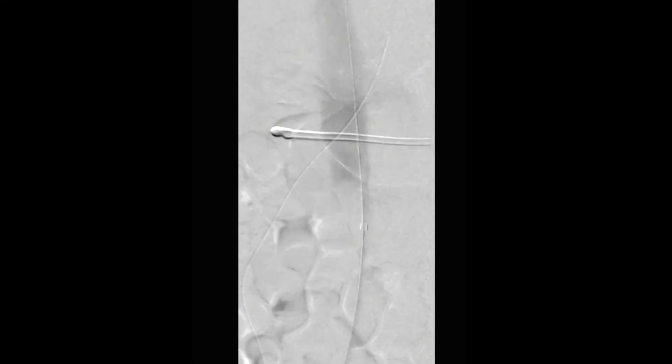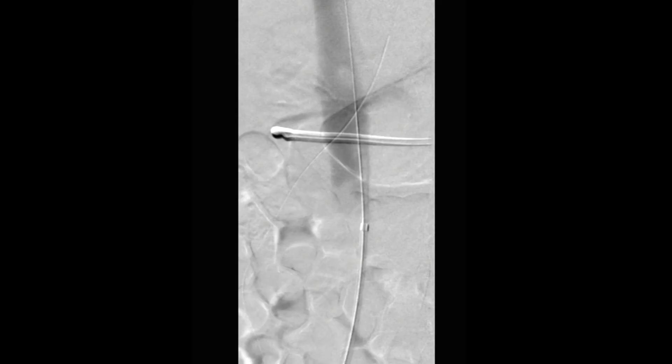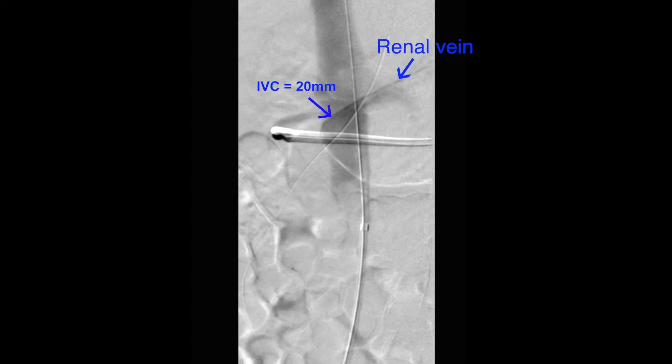Inferior vena cava filters are placed below the lowest renal veins and above the confluence of the iliac veins. Contraindications to placement of IVC filters are a diameter of less than 15 mm and above 30 mm.